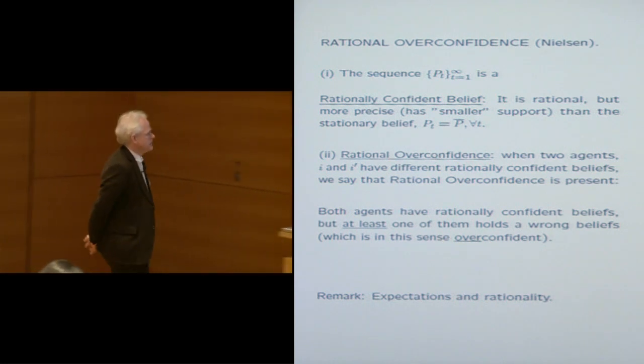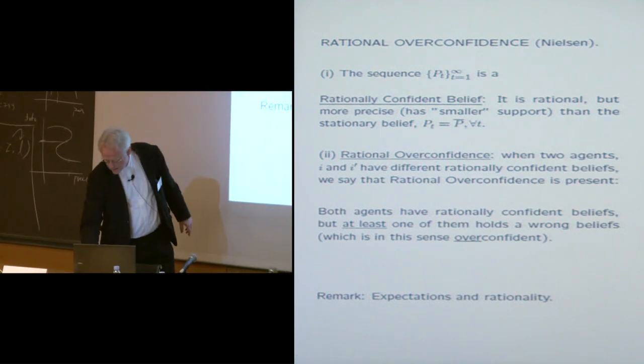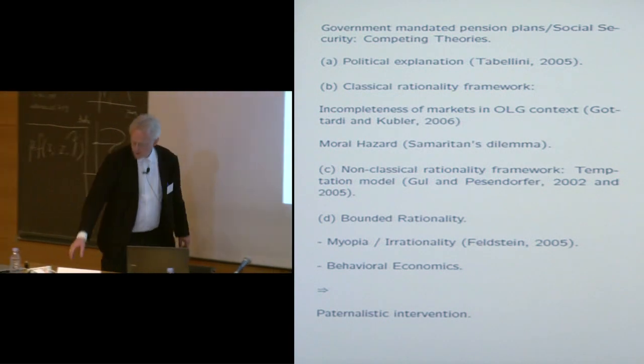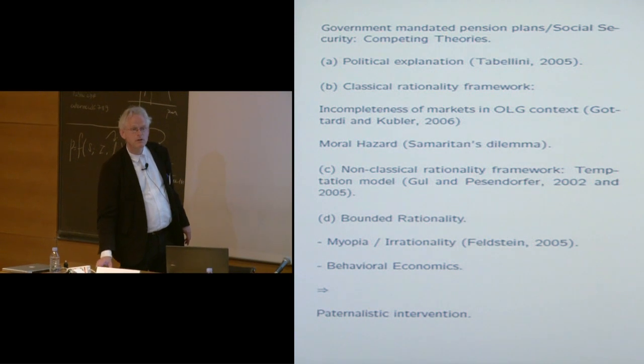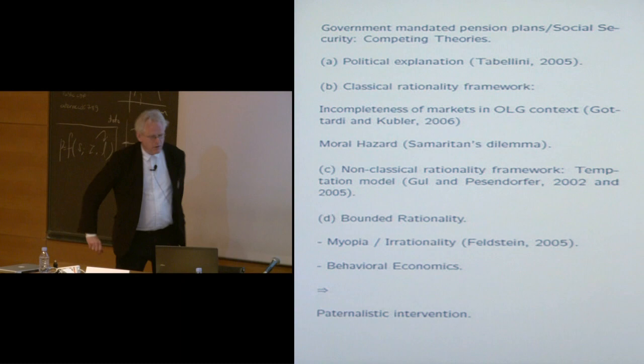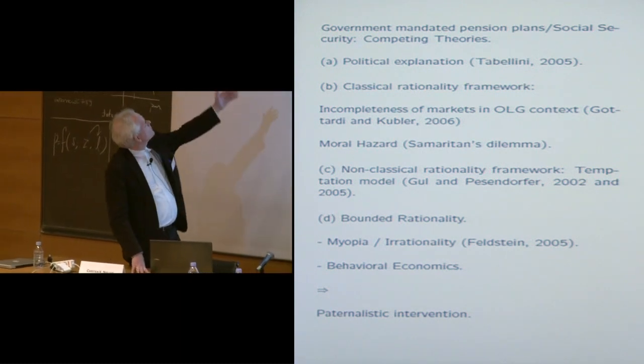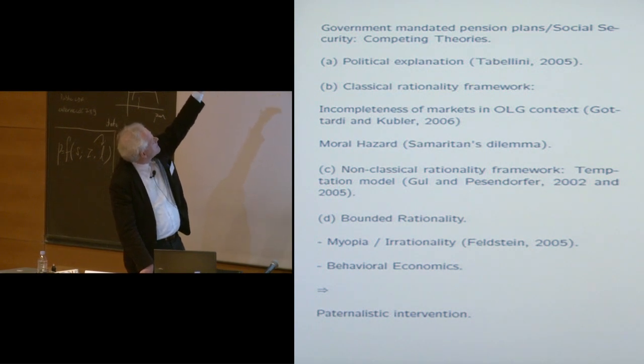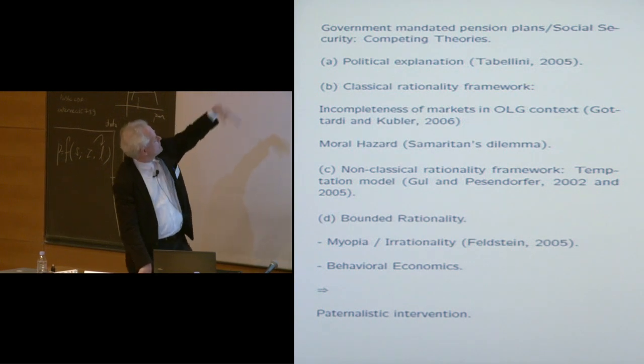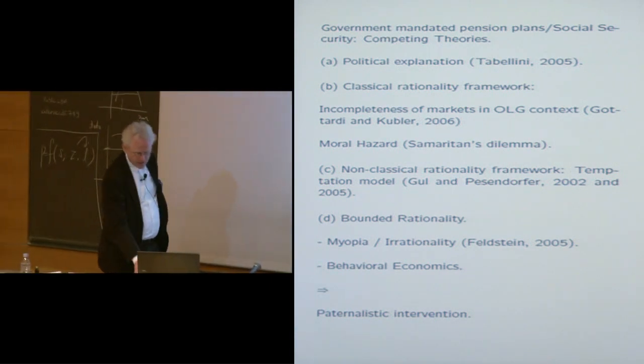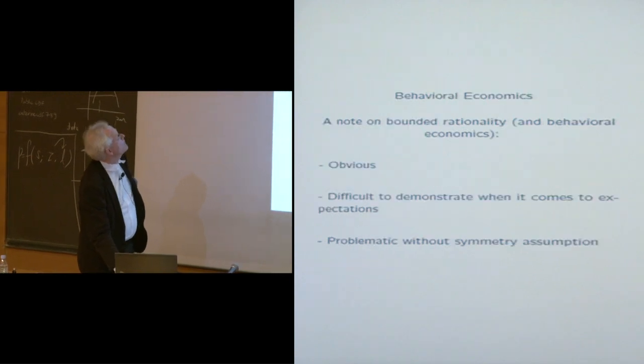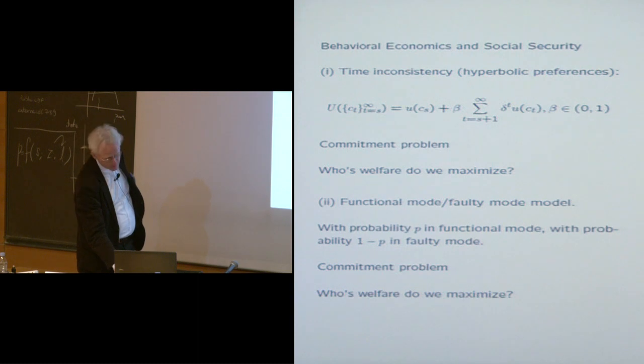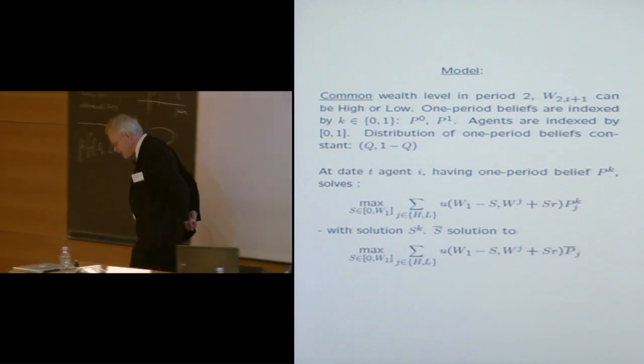So whether you should call beliefs rational or not, that's something you could certainly discuss. I mean whether you call them irrational or not is certainly something you can discuss. I have ten minutes. So I will drop the literature. I always want to say that there are a few, there's a political explanation of social security. There are some classical explanations. There are some explanations using non-classical rationality framework and there are for the most part explanations using bounded rationality. Agents are wrong in one way or the other. And one of course very prominent example is time inconsistency, hyperbolic preferences.